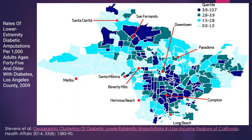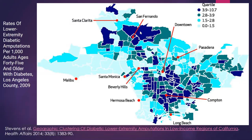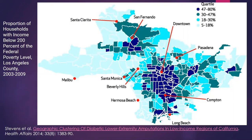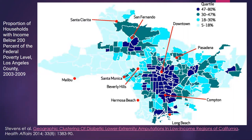Whereas Compton, some parts of downtown, the San Fernando Valley, and the north have really high rates of amputation compared to those areas. Another figure shows poverty across the county, and you can see the same areas that tended to have high rates of amputation also tend to have high levels of household poverty. Depending on the research question, poverty could be a confounder, or it could be the exposure of interest — you could look at whether poverty causes amputations directly.